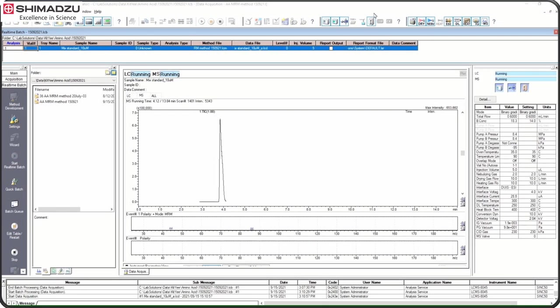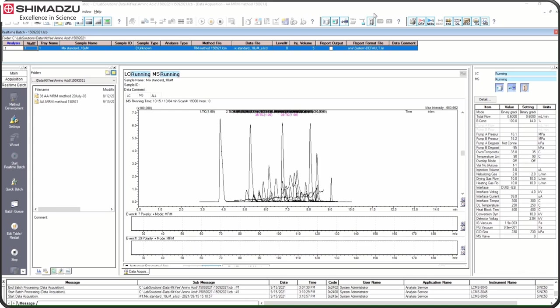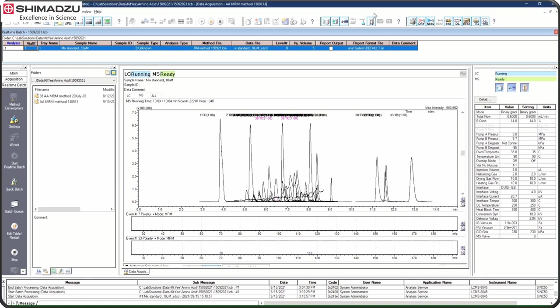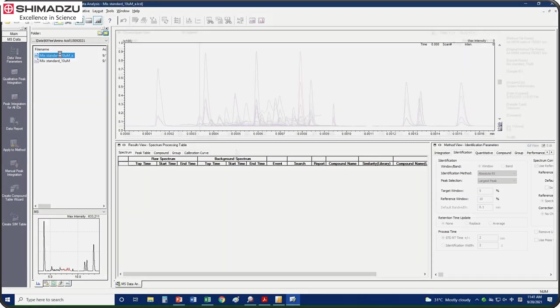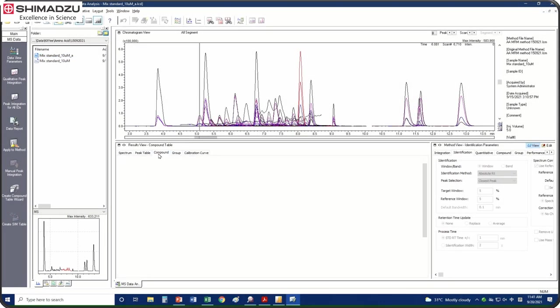Monitor the runs by viewing the real-time total ion chromatogram that displayed in the MS tab. In this analysis, all amino acids are detected within a total run time of 15 minutes using a gradient elution.